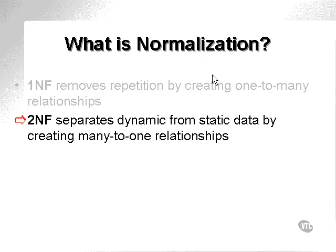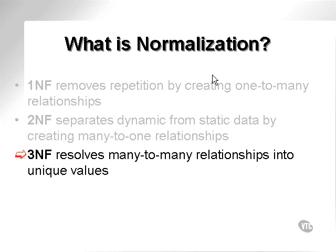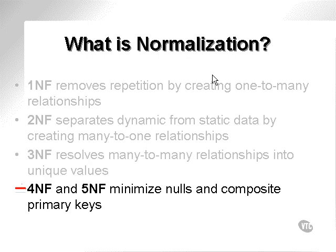Second normal form separates dynamic from static data by creating many-to-one relationships. Third normal form resolves many-to-many relationships into unique values. Fourth and fifth normal form go layers further down.